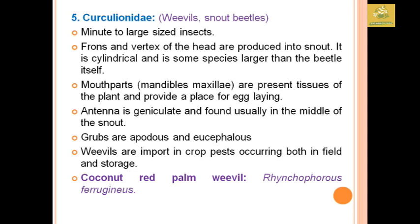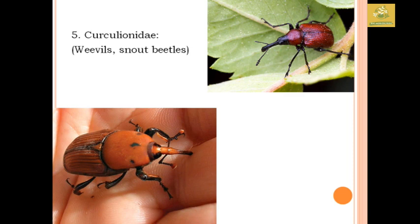Curculionidae comprises weevils and stout beetles. An example is the coconut red palm weevil, Rhynchophorus ferrugineus. They range from minor to large-sized insects. The antennae are geniculate, usually inserted on the middle of the rostrum. Grubs are apodous and fleshy. Weevils are important crop pests, occurring both in the field and in storage.